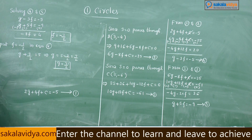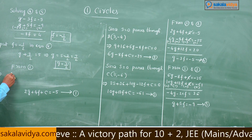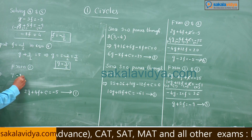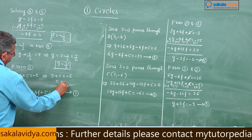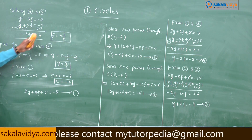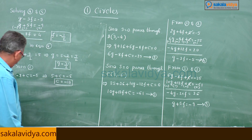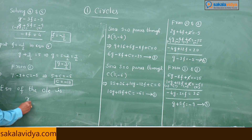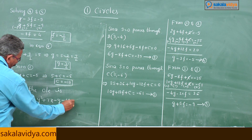From equation 1, substituting g = 7/2 and f = −1/2: 7 + 4f = 7 − 2 = 5, so 5 + c = −5, giving c = −10. Now we know g = 7/2, f = −1/2, c = −10. Hence the equation of the circle is x² + y² + 7x − y − 10 = 0. That is the answer.